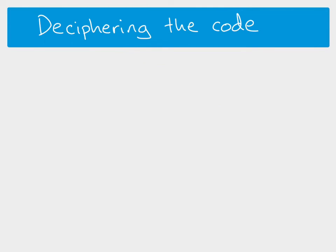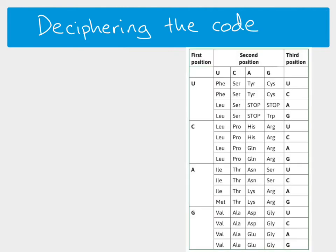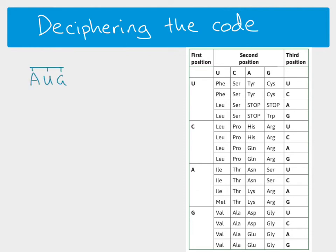So how do we decipher the code? We know that codons code for amino acids, but how do we know which codon codes for which amino acid? We use a codon table. This table is for RNA codons — you can tell because it contains U (uracil), which only appears in RNA. If you were looking at DNA codons you would use a slightly different table with T instead of U. Make sure you are looking at the right table.